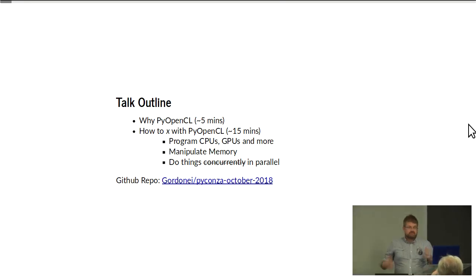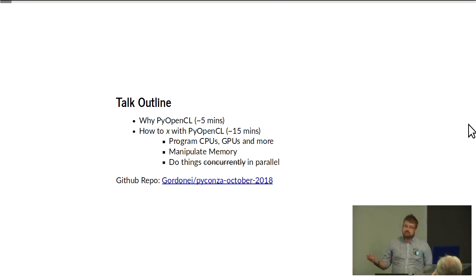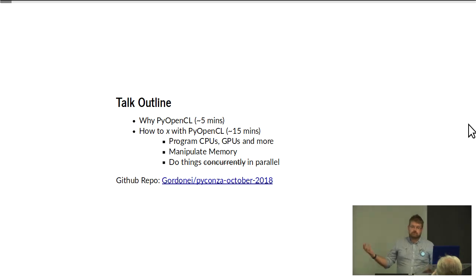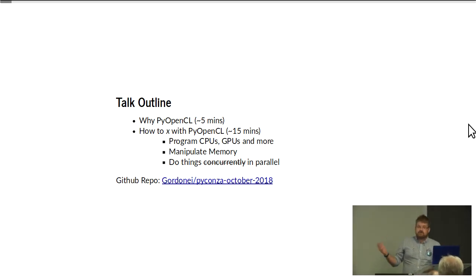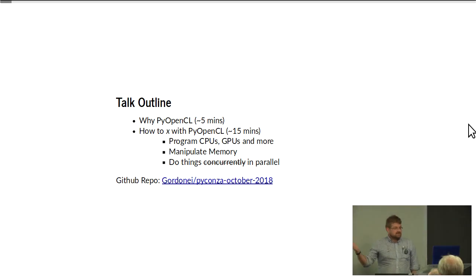In this talk, I'm going to talk about why you might want to consider using something like PyOpenCL, which is just the Python bindings for a standard called OpenCL — a heterogeneous computing standard. Then I'm going to take you through a quick walkthrough about how to do a few straightforward things in OpenCL and get you going with using CPUs, GPUs, and even FPGAs. I'll also talk about how to manipulate memory and how to actually do things in parallel — not just concurrently, but actually in parallel.